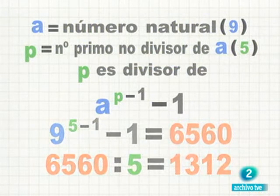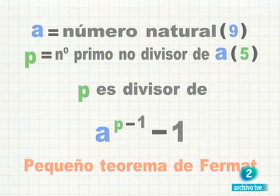Esta brillante joya numérica se conoce como el pequeño teorema de Fermat, y, cómo no, fue demostrado por Euler cuando tenía 29 años.